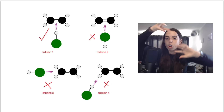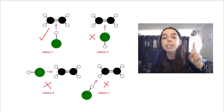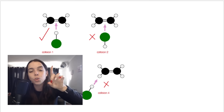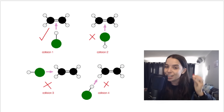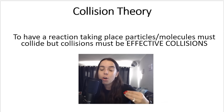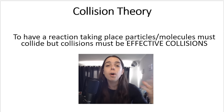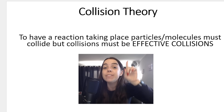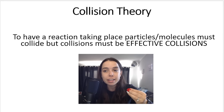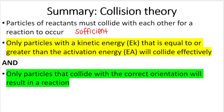They're showing you that only a certain orientation will result in effective collisions, which will therefore result in a reaction. To summarize: for a reaction to take place, particles or molecules must collide, but the collisions must be effective collisions. Particles or molecules must have kinetic energy equal to or greater than the activation energy — that is criteria number one — and the orientation must be correct.